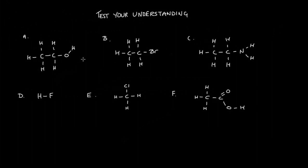Let's start with A. We can clearly see an O-H — an oxygen bonded to a hydrogen — so we're definitely going to have hydrogen bonding occurring. With B, we've got carbons and hydrogens, which won't work, and a carbon with a bromine, which won't work either. So B is not going to exhibit hydrogen bonding.